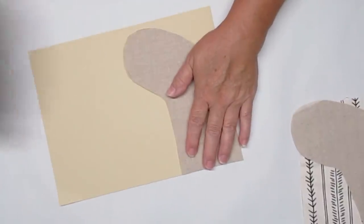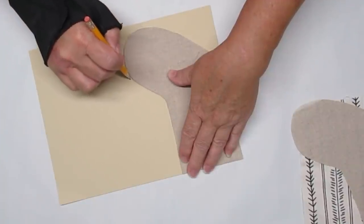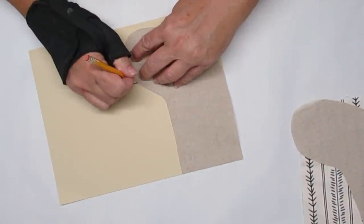Using some beige colored cardstock, I'm going to be cutting out the same template stocking because I need to have a little bit of weight on the back of the fabric.